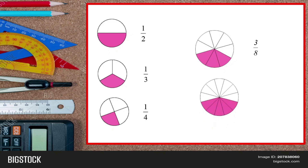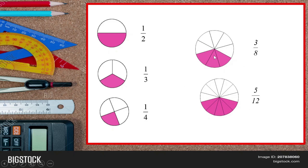And the last example: how many divisions? Counting one through twelve — so twelve divisions, that is our denominator. How many shaded? Counting one through five — so we have five shaded. That gives us five over twelve. So those are examples of a fraction.